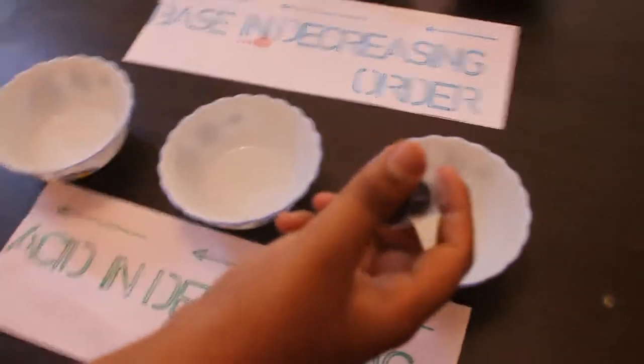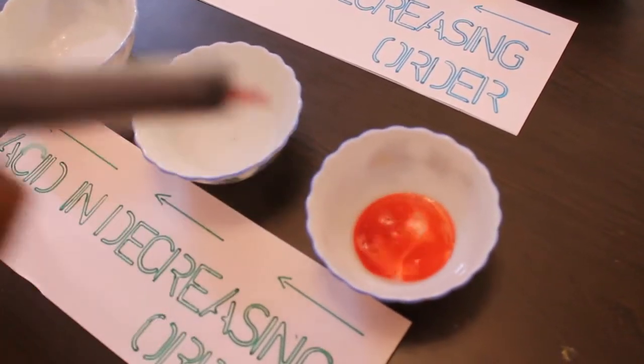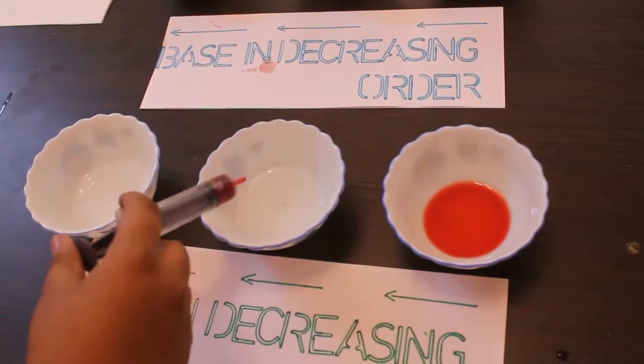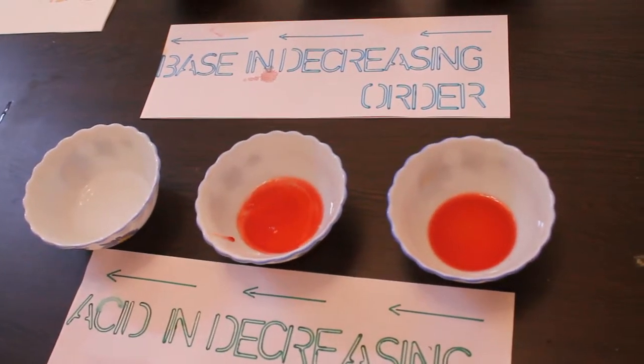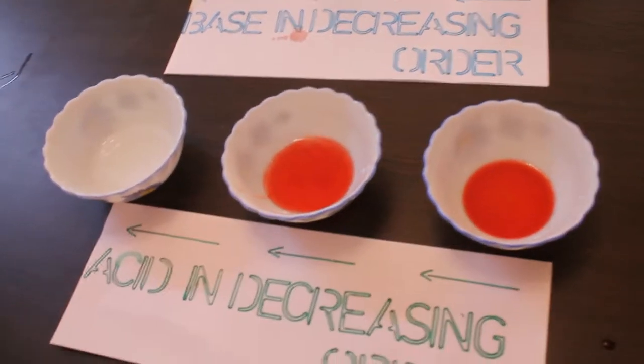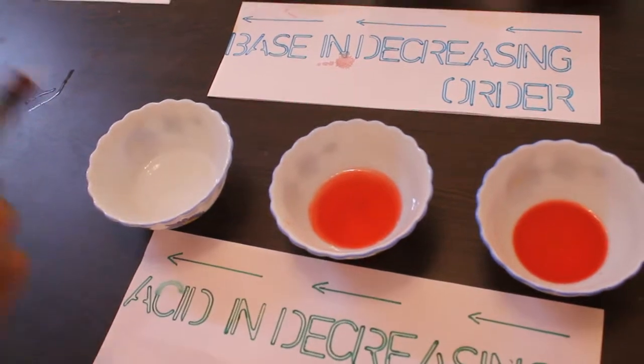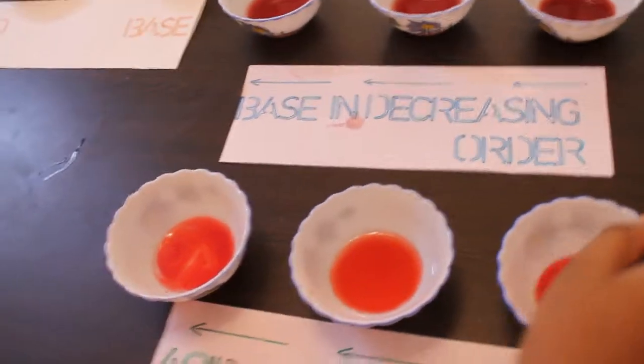Now we shall add the beetroot juice to the strongest. We are adding it to the weaker solution. Third we are adding to the weakest solution. Now we shall stir it properly.